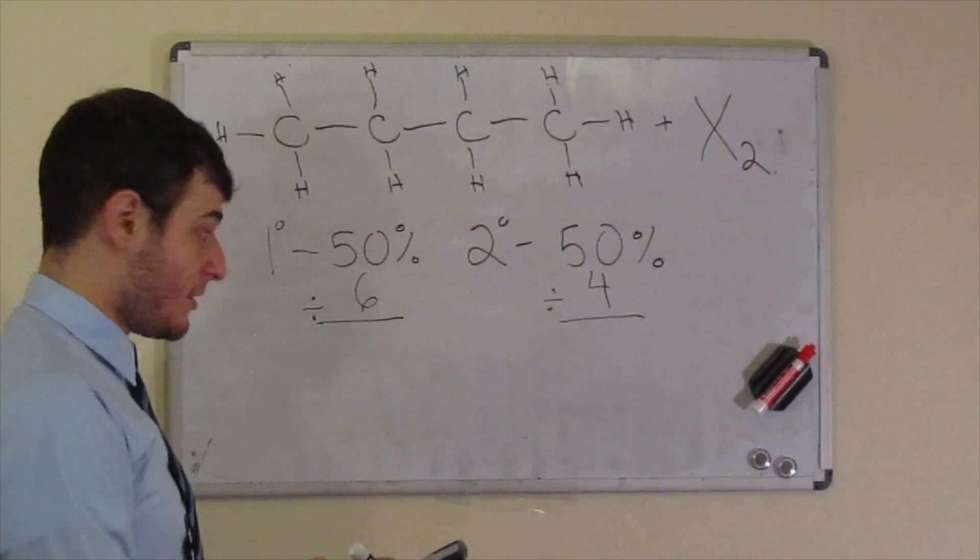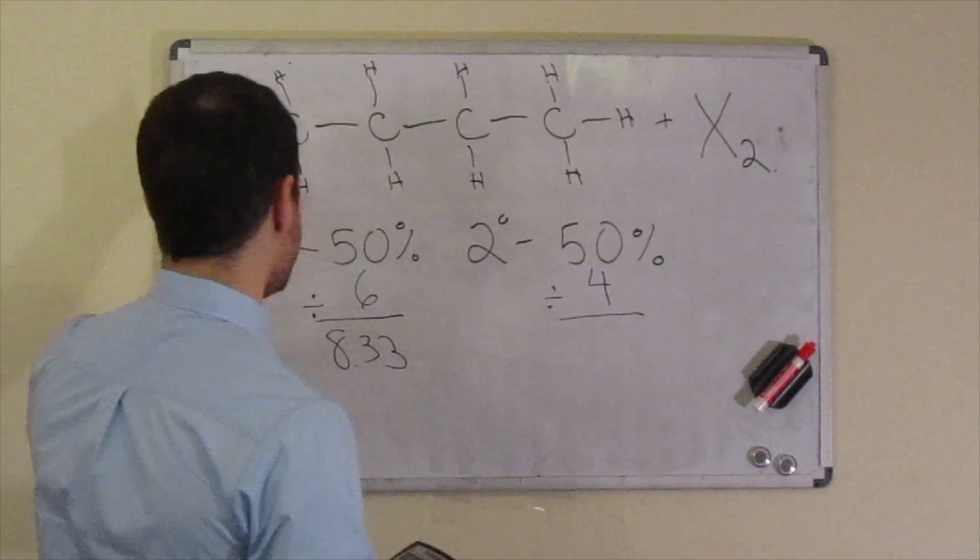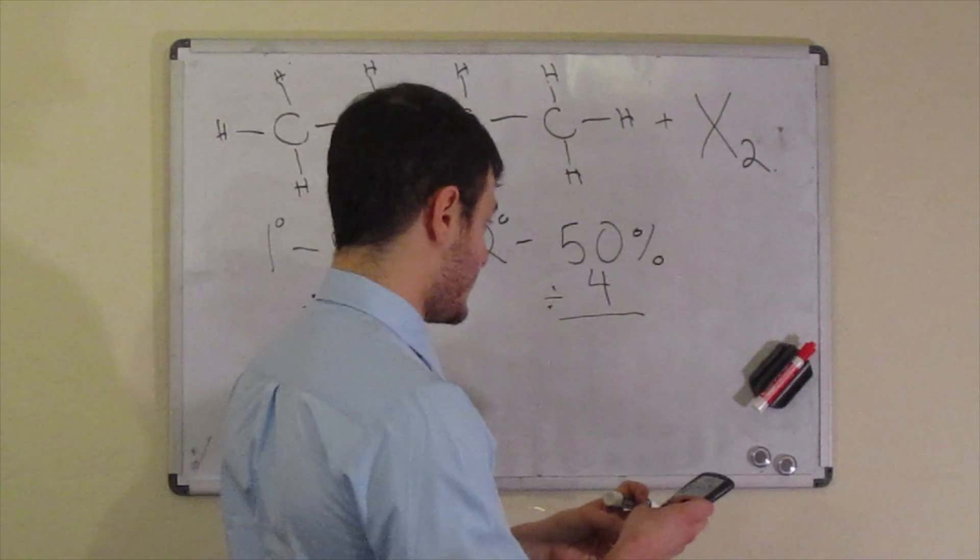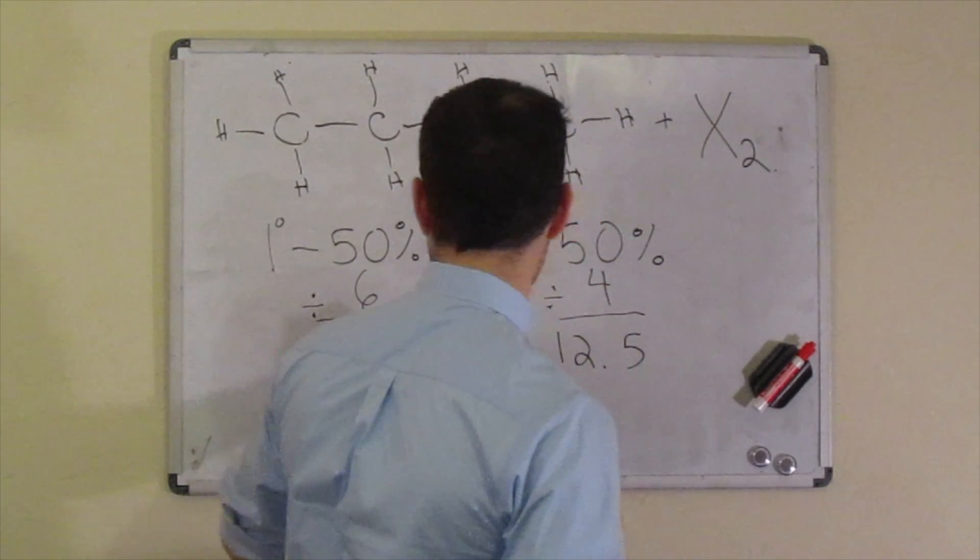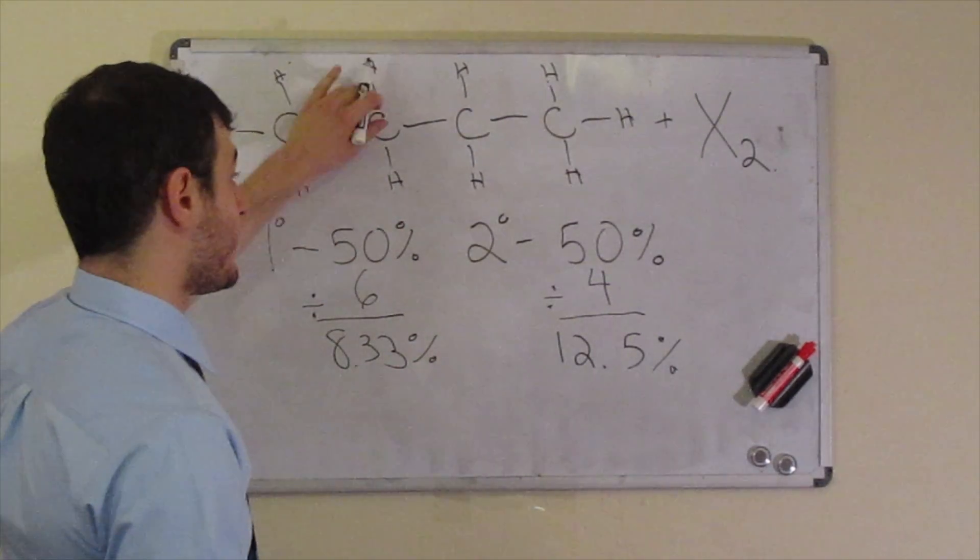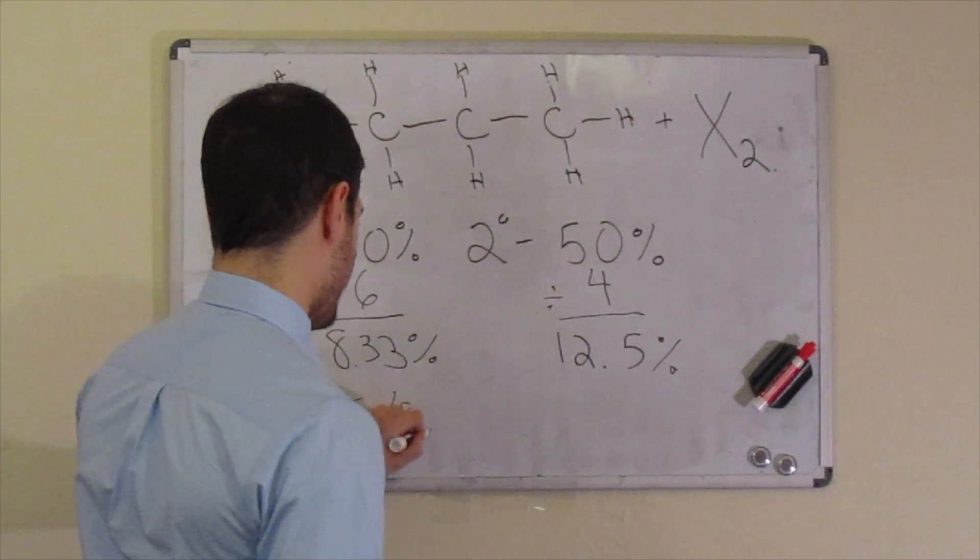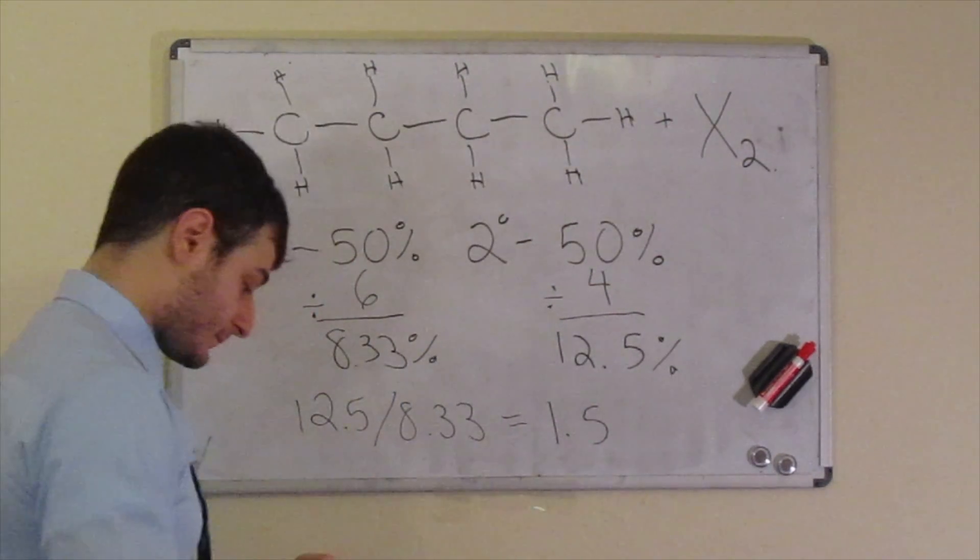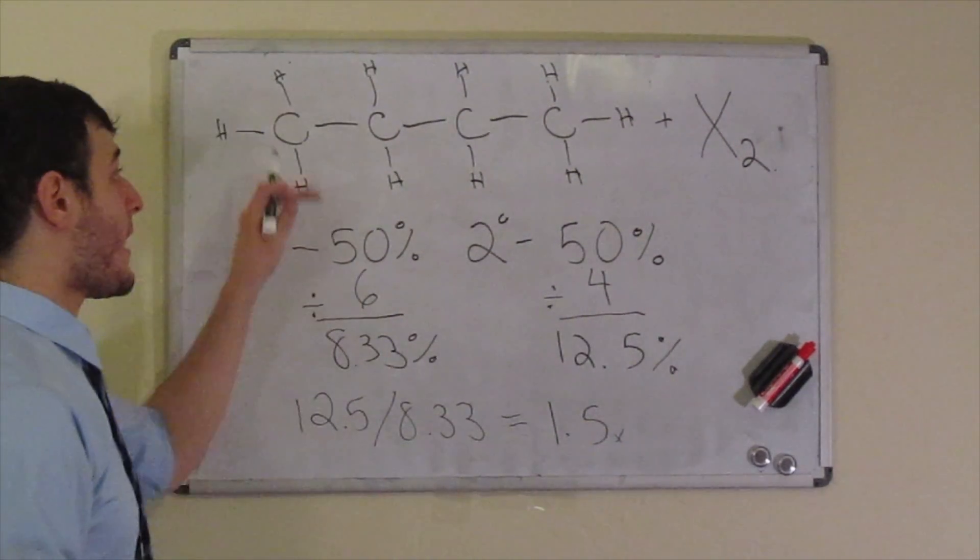So when you actually do this math out, you get 50 divided by 6 is going to equal 8.33. That is to say that each primary hydrogen is going to individually react 8.33% of the time. And then 50 divided by 4 is 12.5. So these are both percents. So if we want to find out relatively how much more reactive these are, we just divide the two numbers. So if you do 12.5 divided by 8.33, you're going to get 1.5. So that is to say that the secondary hydrogens are 1.5 times as reactive as the primary hydrogens.